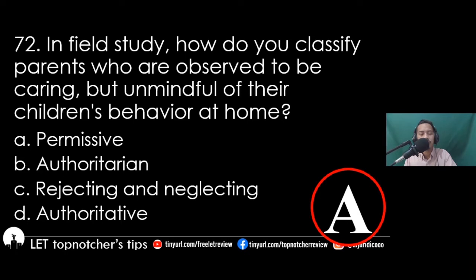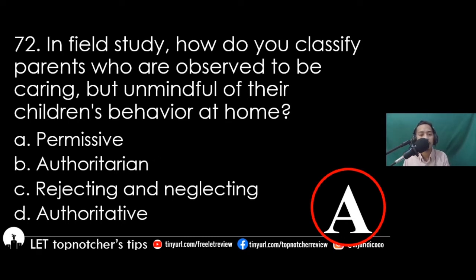Short rationalization: Authoritative parenting means a parent is caring and supportive yet has high expectations from his or her children. Rejecting and neglecting means the parent does not provide the needs of children and doesn't care. Authoritarian means parents have high expectations from children but less care. Permissive has high care but less expectations from their kids.